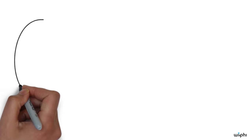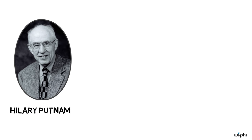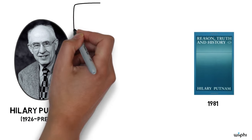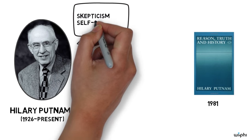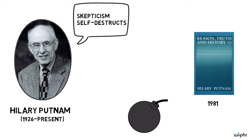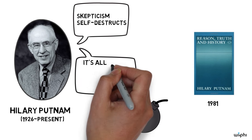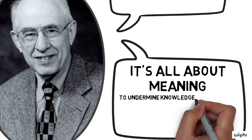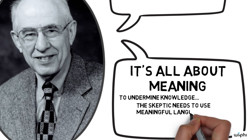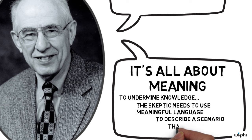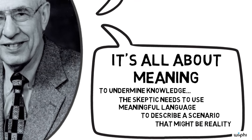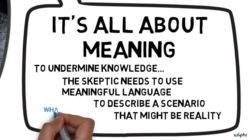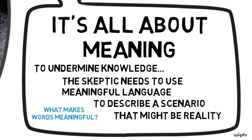The first semantic theory we'll look at comes from Hilary Putnam's book Reason, Truth, and History. One of Putnam's goals in the book is to show that skepticism ultimately self-destructs. The words that the skeptic is using can't really have the meaning that the skeptic needs them to have. In order to make you feel like you don't know anything about the outer world, the skeptic needs to use meaningful language to describe a scenario that might, for all you know, actually be your reality. Putnam argues that if we take a closer look at what makes our words meaningful, we'll see that the skeptic can make his scary scenario meaningful only in a situation where that scenario couldn't be what's really happening to you.